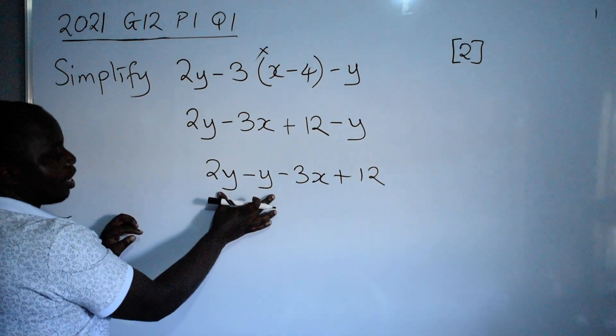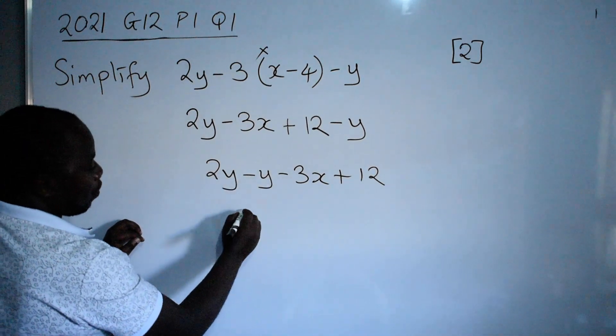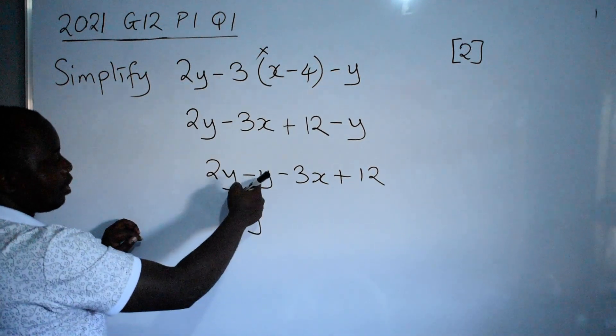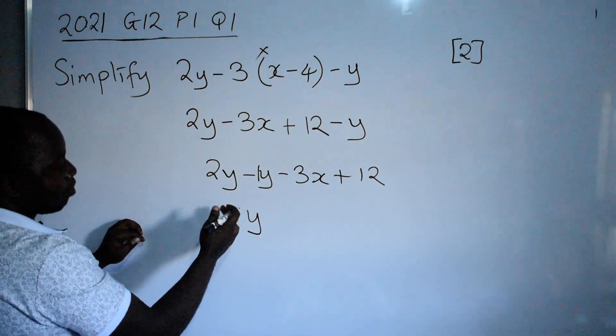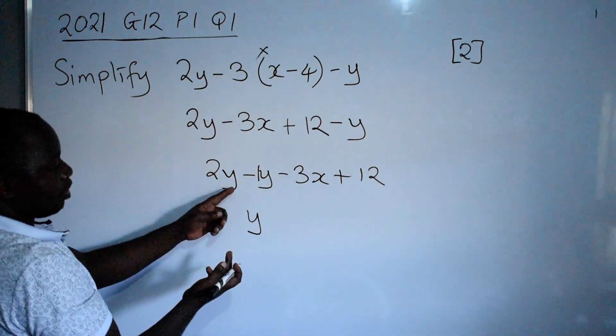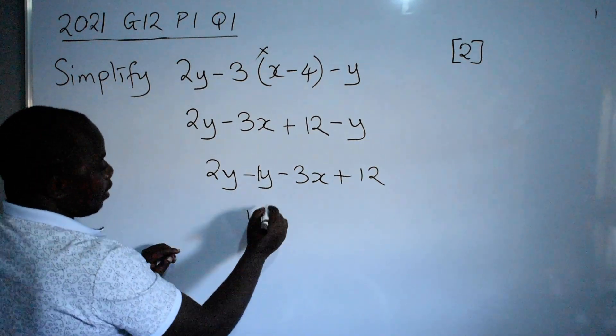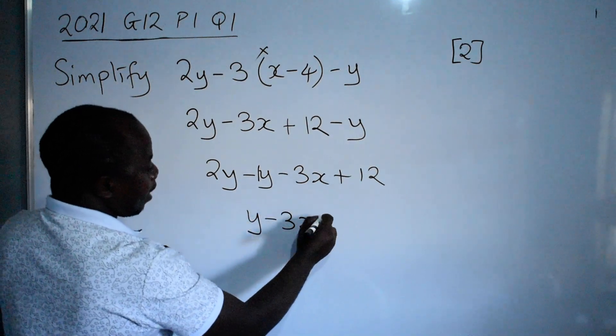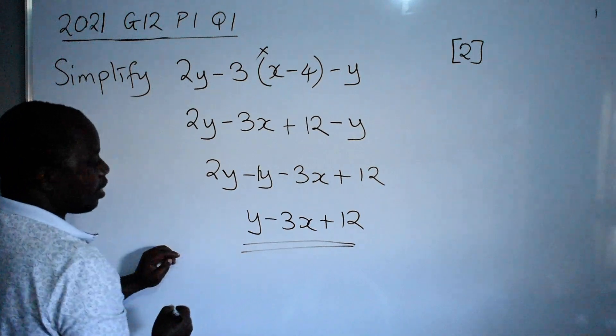Since these are like terms, you can subtract them. 2y minus y will give you y. Because here that's the same as saying 1. 2 minus 1 is 1. The variable involved is y. So you cannot say 1y. You just say y. Then minus 3x. Then plus 12. This is your final answer.